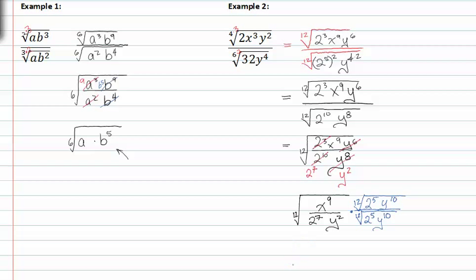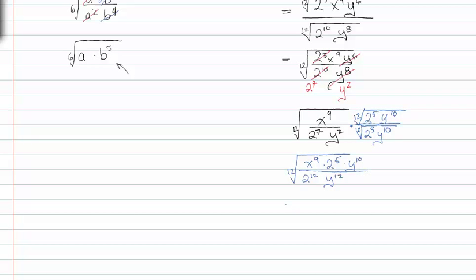So now I have the twelfth root of x to the ninth times two to the fifth times y to the tenth, all over two to the twelfth, y to the twelfth. Breaking up the numerator and denominator, I get two to the fifth — which is thirty-two — times x to the ninth, y to the tenth, all over two y.